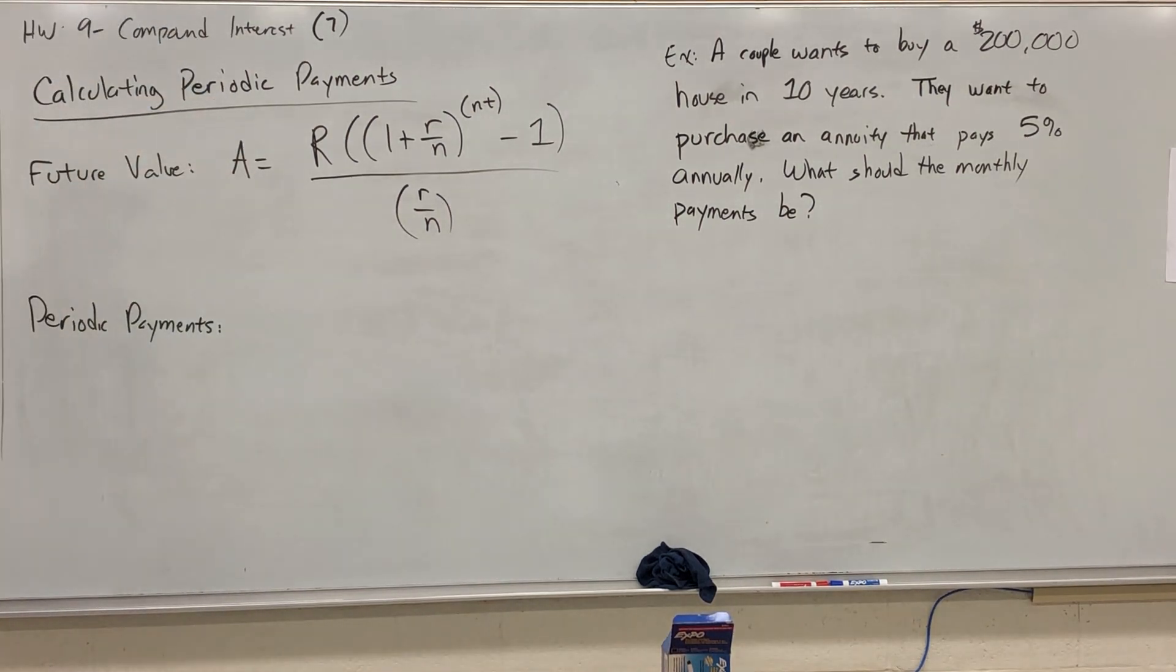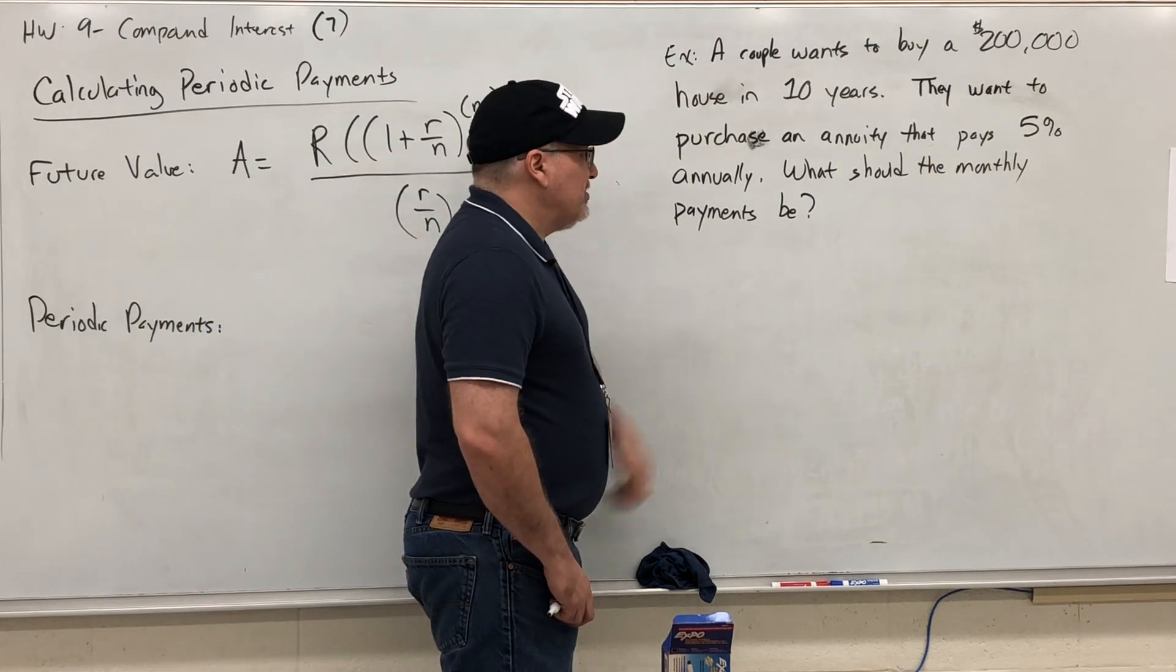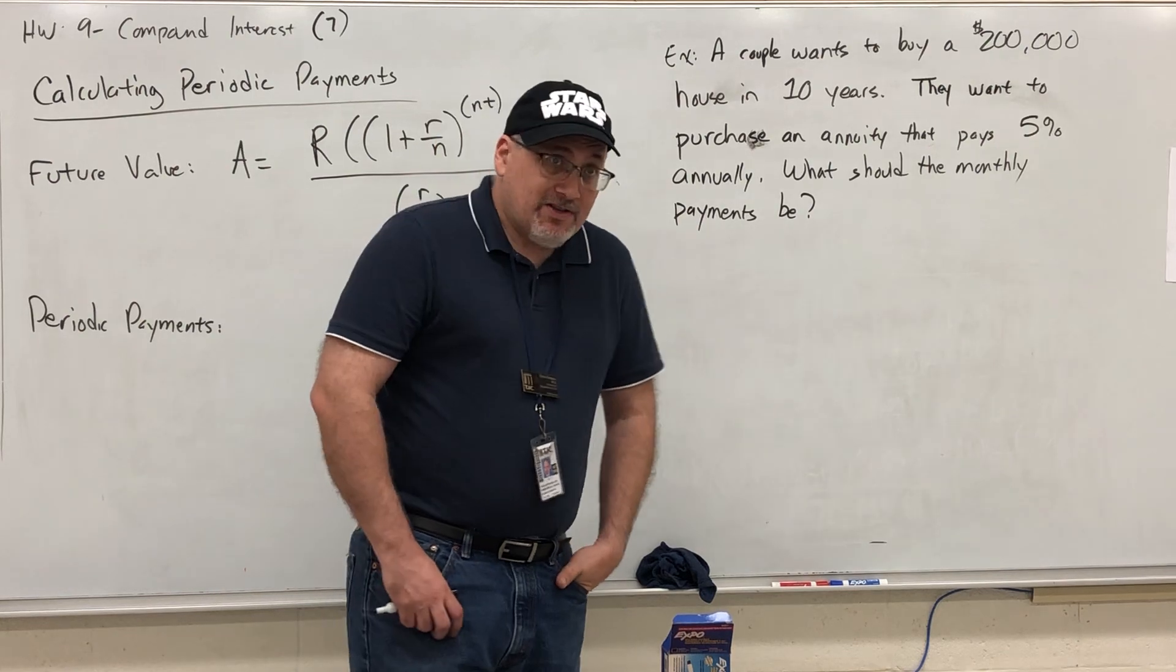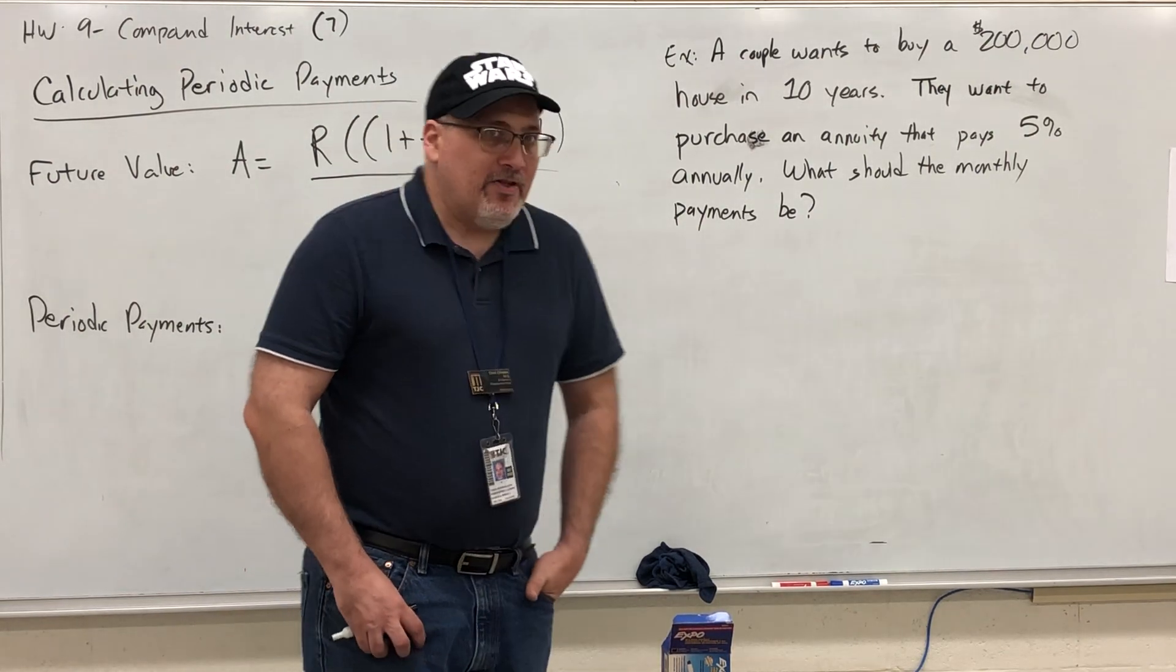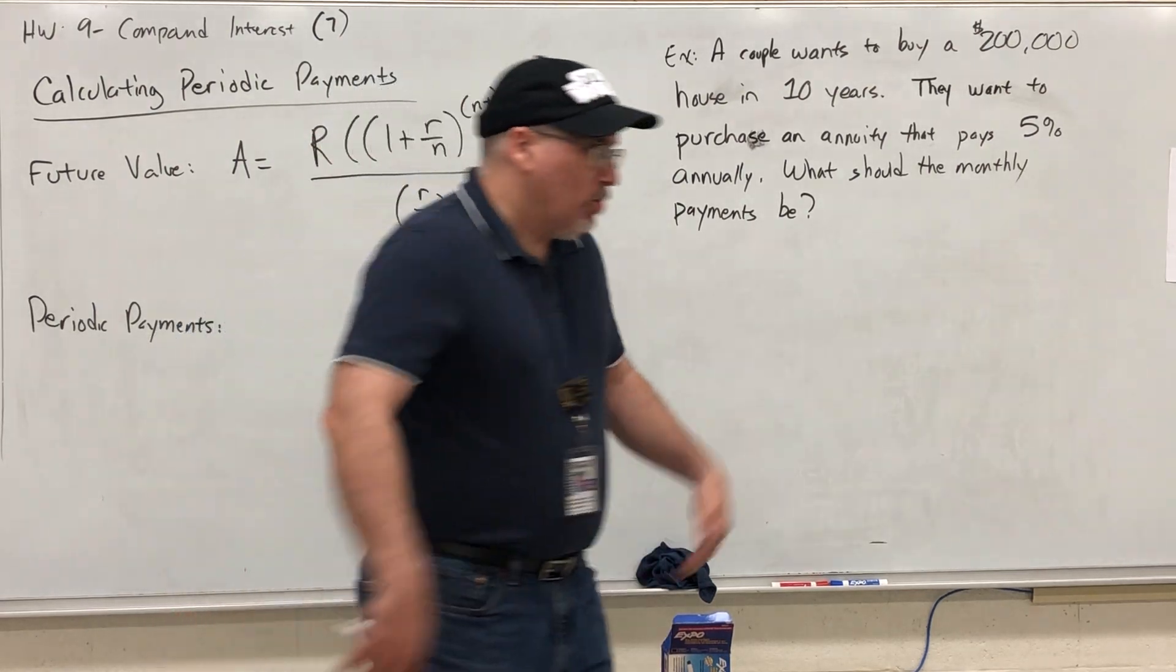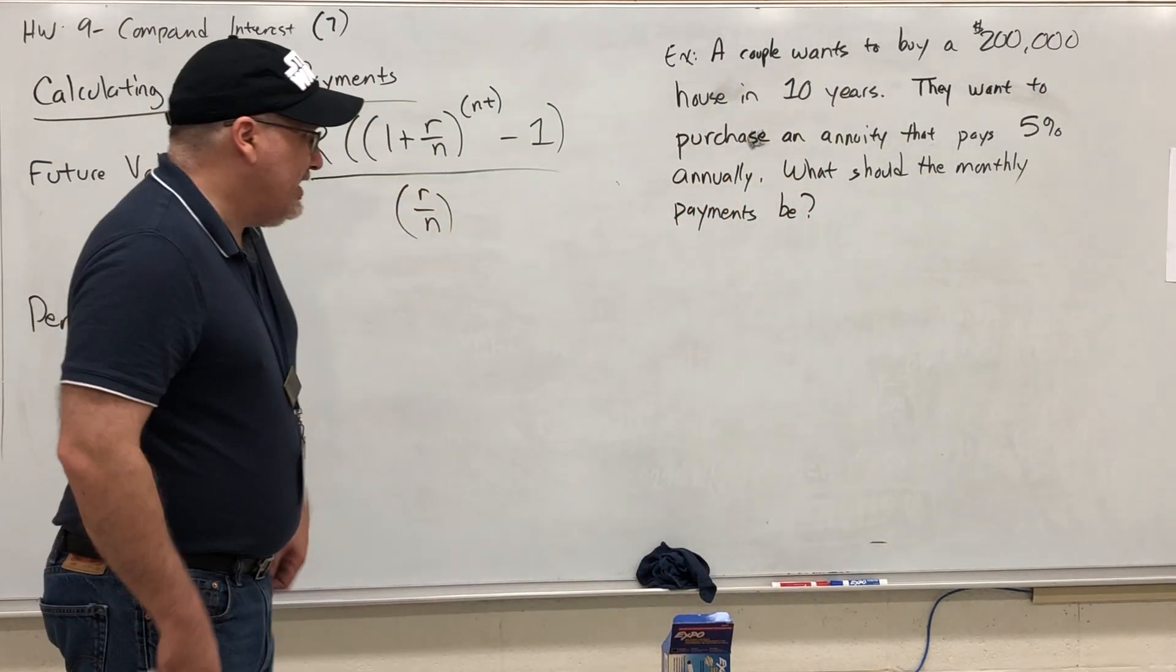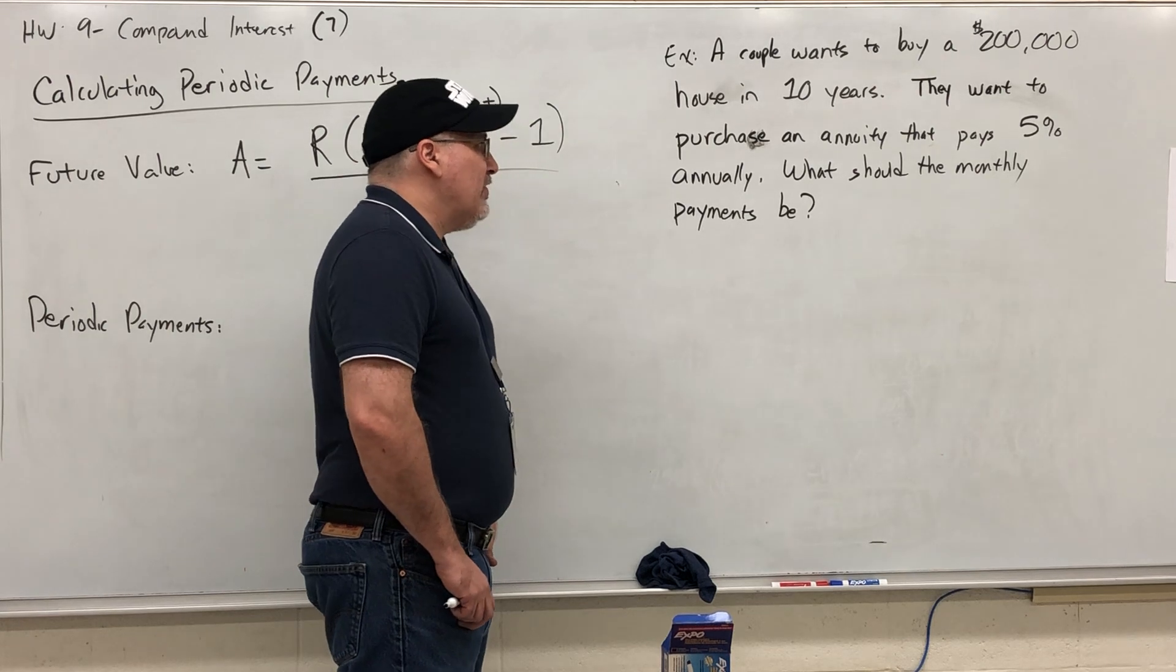But sometimes you need to reverse the process. For example, a couple wants to buy a $200,000 house in 10 years. Remember the previous version of this two videos ago? They needed a hundred and some odd thousand dollars now that they just sat in the bank. But now they're thinking about buying an annuity that pays 5% annually. What should the monthly payments be?